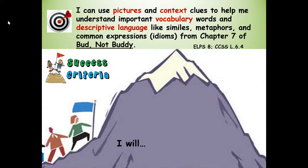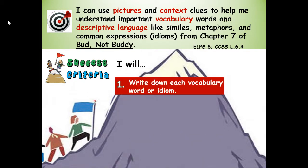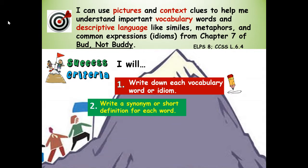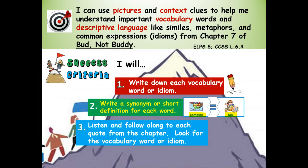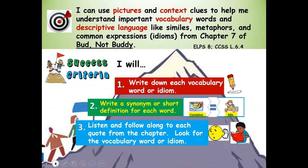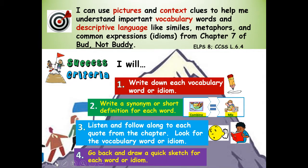Here are our steps to success. Number one, write down each vocabulary word or idiom every time you see the pencil. Number two, write a synonym or short definition for each word. Three, listen and follow along while I read each of the quotes from the chapter and look for the vocabulary word or idiom. And four, go back and draw a quick sketch for each word or idiom.